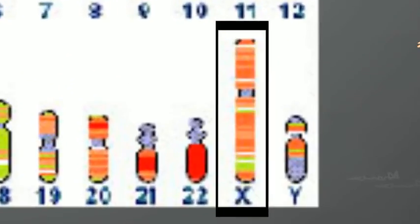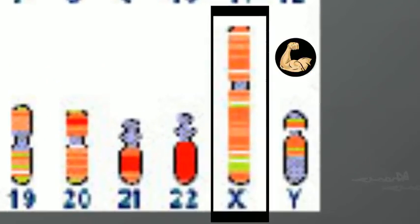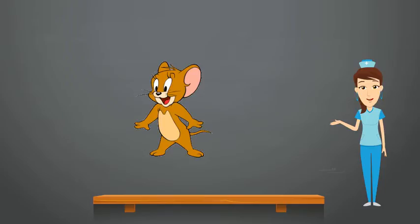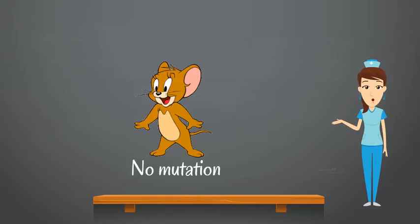A gene on the X chromosome affects your muscles. If the gene is mutated or changed, it can affect your muscle function. Normally, there is no mutation and your muscles develop without interference.